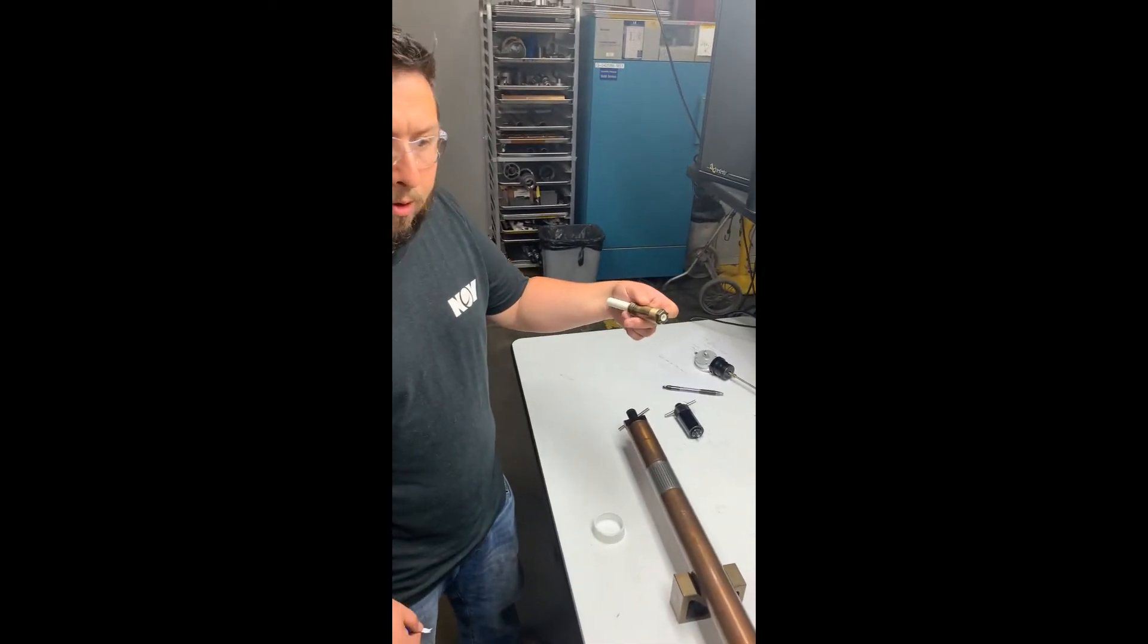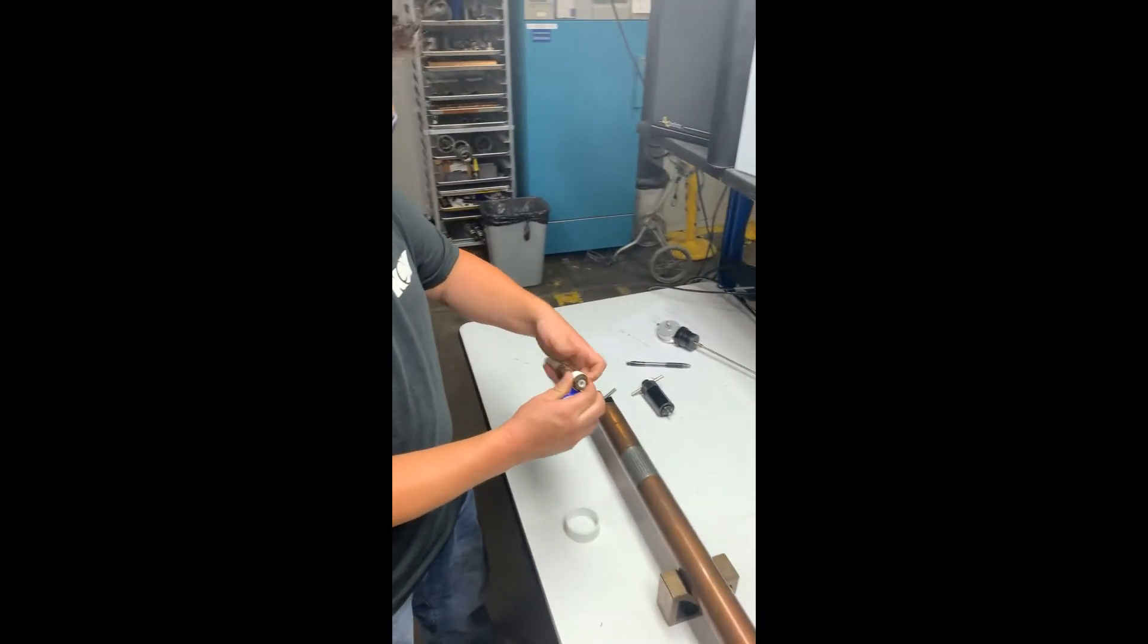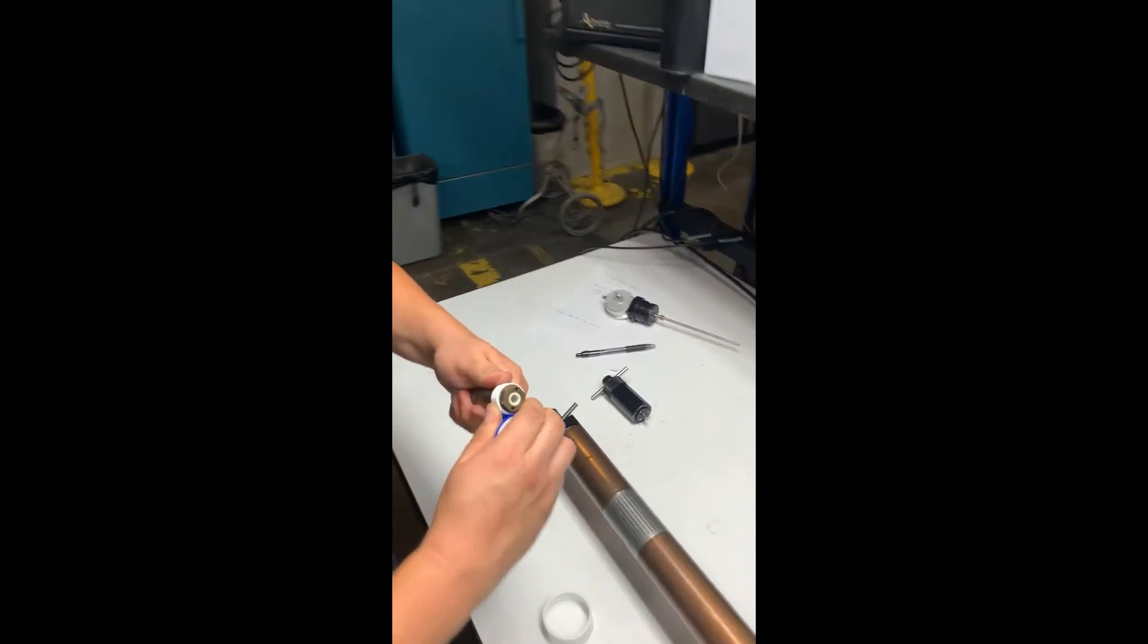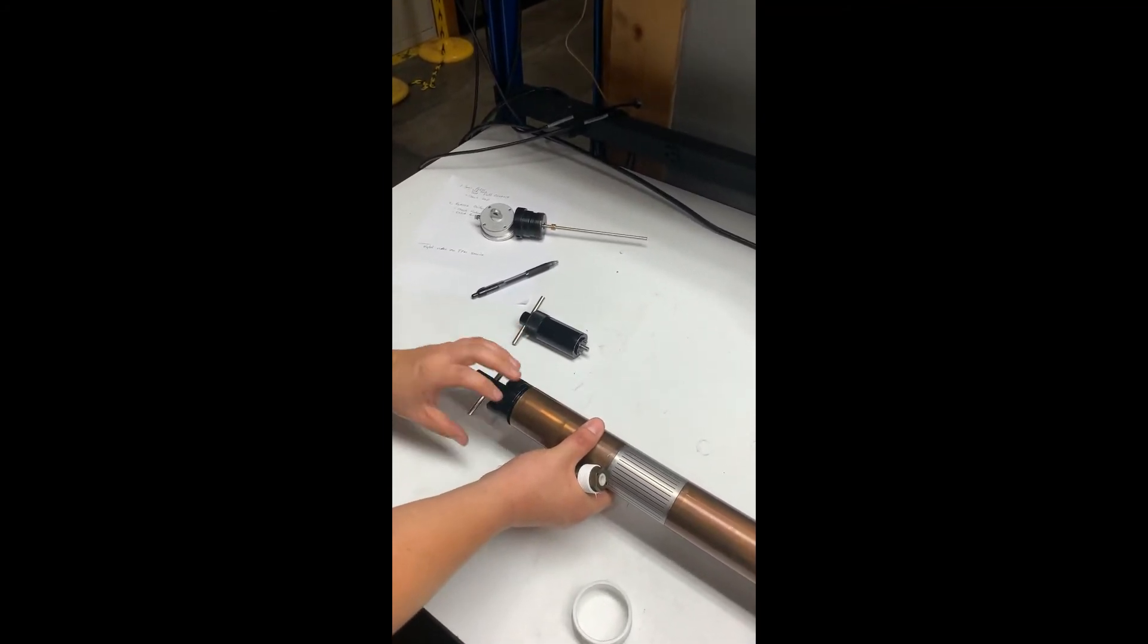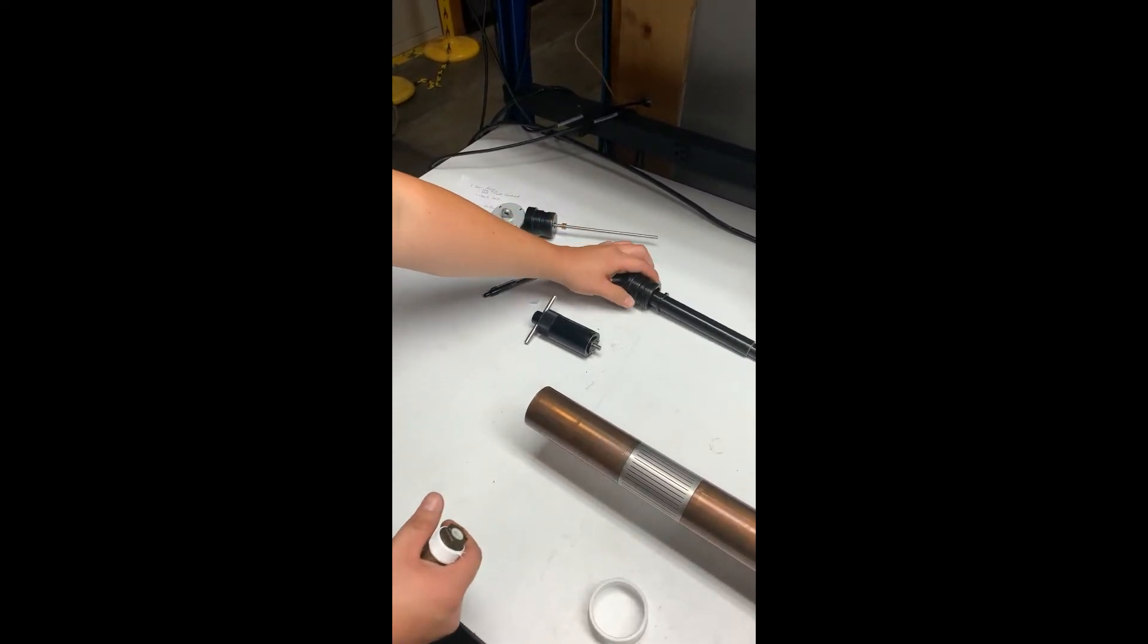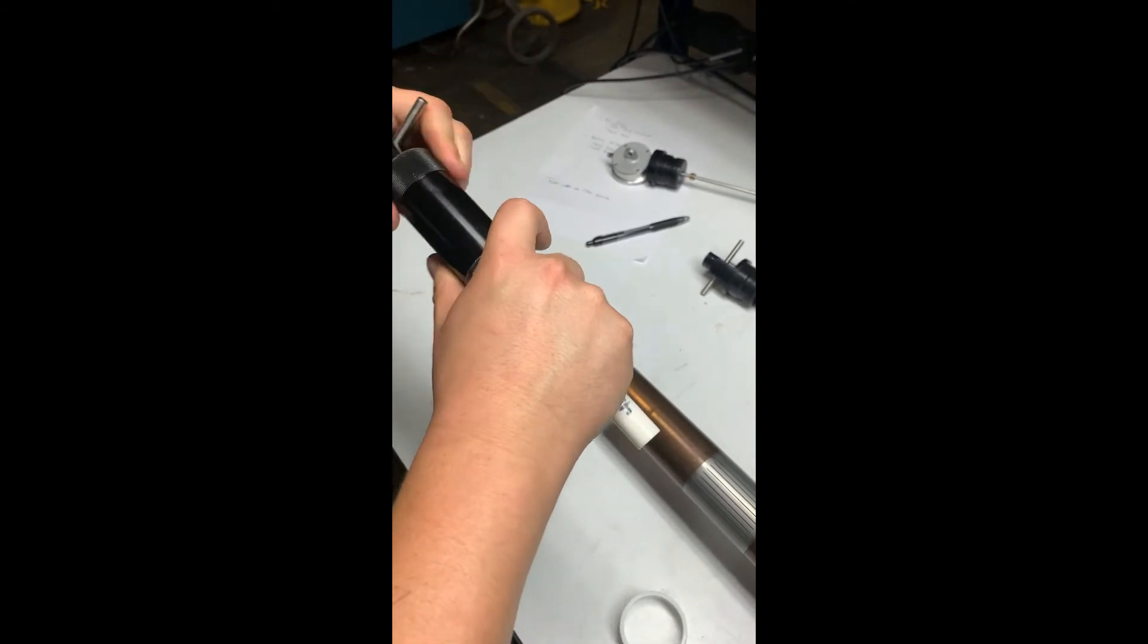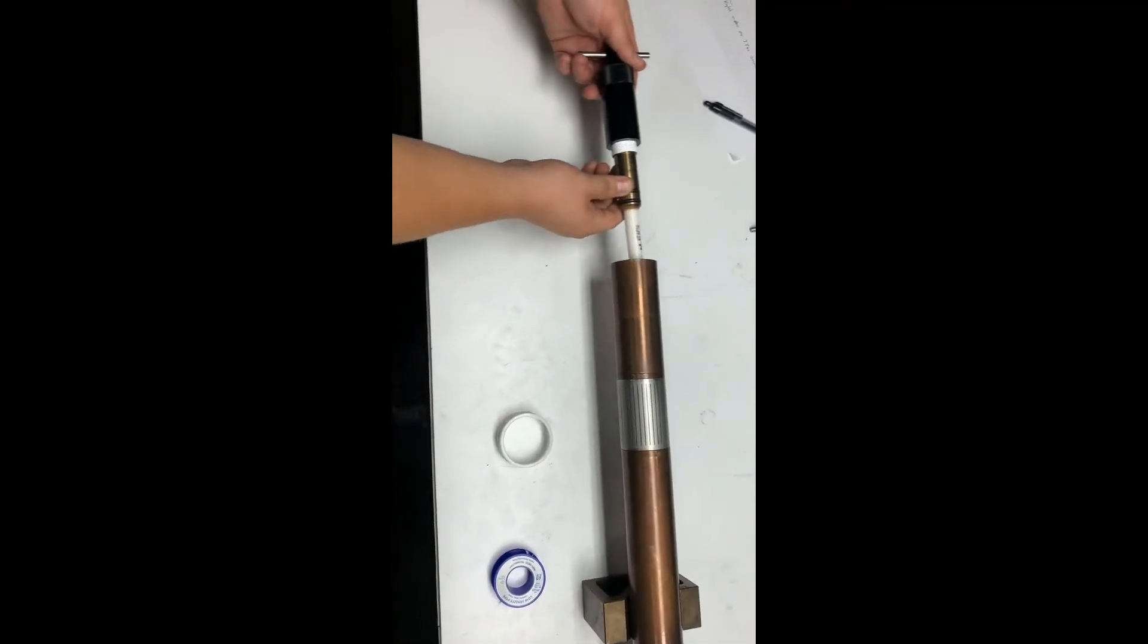In this step we will be reinserting our orifice holder. The first step is you take your teflon tape and apply it to the threads. Remove your verification tool. Install your orifice holder tool into your orifice holder. And now insert your orifice holder into your tool.